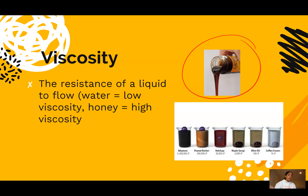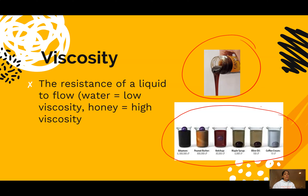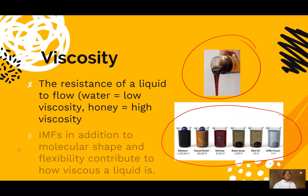You can measure viscosity in two ways. One, you could measure how much liquid flows in a certain amount of time. Two, you can use something like a marble or lead sphere, start it at the top of the liquid, and measure how long it takes to settle down. The more viscous the fluid, the longer it takes; the less viscous, the quicker it moves.